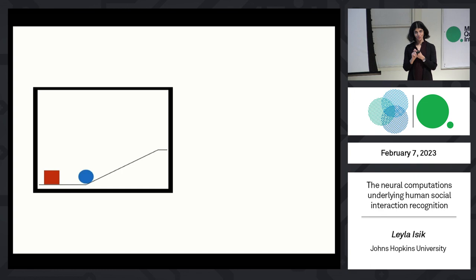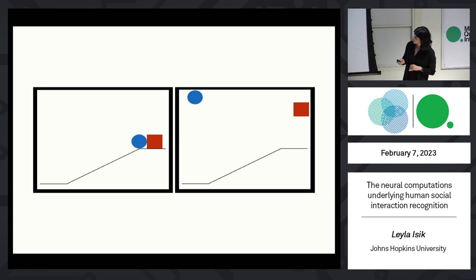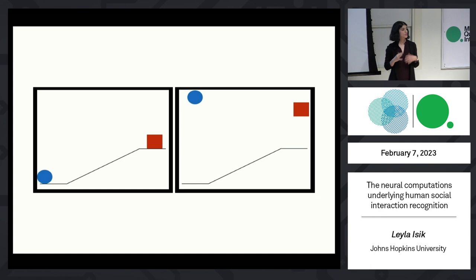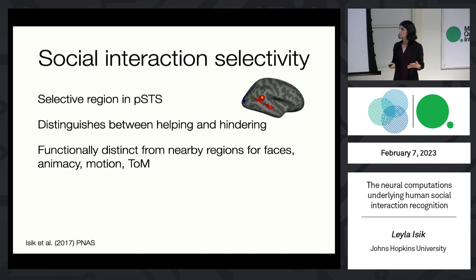In a second experiment, we wanted to see whether responses in this region generalize to new stimuli and whether they can tell you something about the type of interaction. Similar to the Kylie Hamlin infant study, we designed stimuli where one agent was trying to achieve a goal and the second agent either helped or hindered it, and we contrasted these with physical interactions — inanimate shapes like billiard balls moving around. We found that not only did responses in this region generalize to the second set of stimuli — responding significantly more to social versus physical interaction — but the pattern of activity could also decode helping versus hindering interactions.